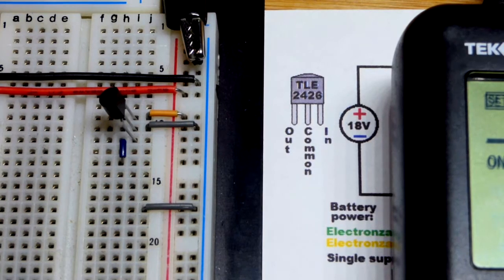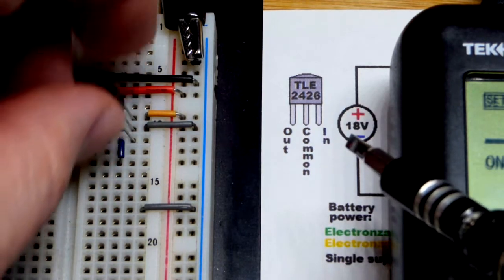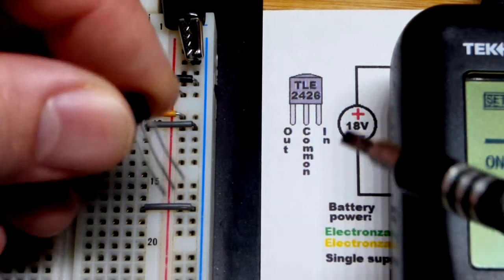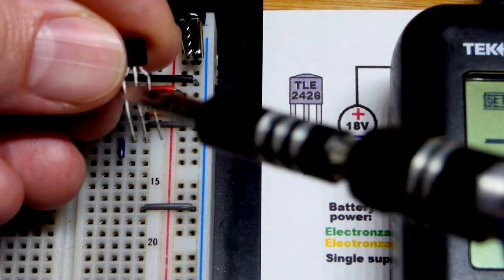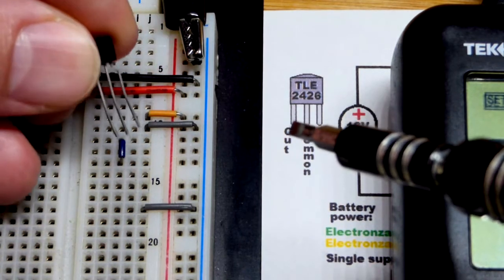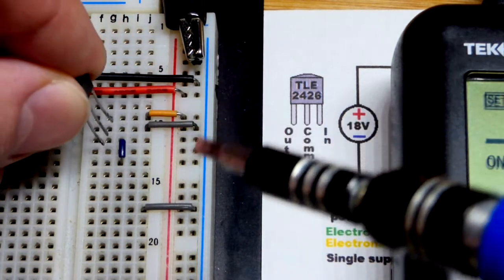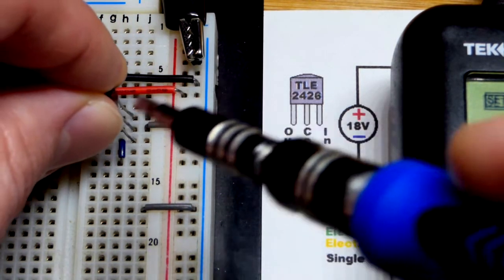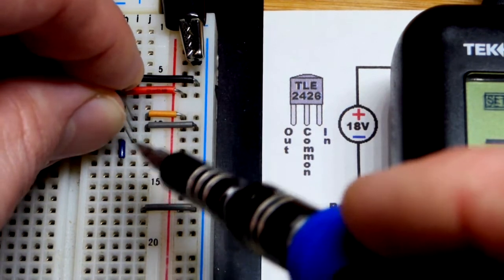For the demonstration, we're just going to do multi-meter measurements. So we got here a TLE 2426, and the left pin there is the output. So we're going to swivel it this way. That was the flat side facing us. Now the flat side is to the right. The output is down there.